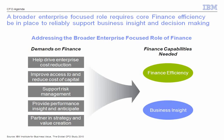Moving on, if we look at the demands on finance and the priorities that they have, essentially two capabilities need to be in place: finance efficiency and business insight. You need to do these two things well to really be able to support the organization in this challenging environment of greater uncertainty, high volatility, and what looks to be a prolonged recessionary period with slow growth prospects over the next few years, at least in the mature markets.